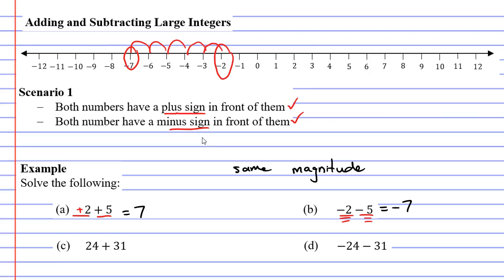And we can see when we did question B, we could have quite easily just said two plus five is seven and put the negative symbol in front of it. And we're going to use this to solve questions C and D.